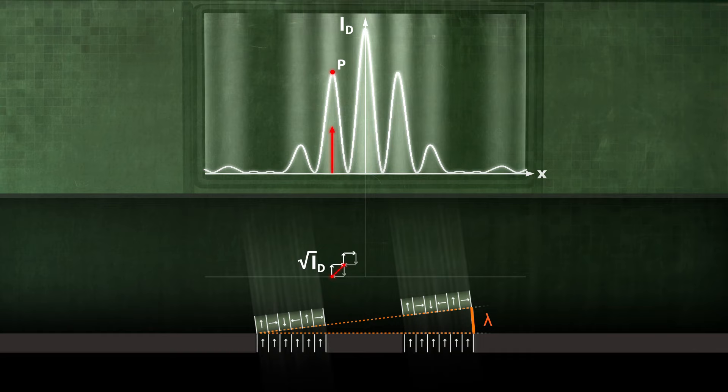Overall, the intensity distribution measured can be well explained based on this model of interfering partial waves.